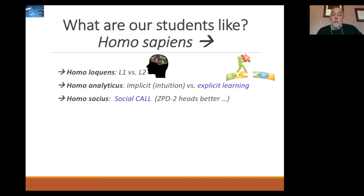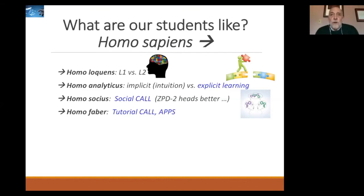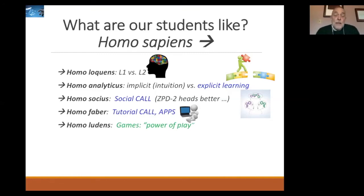We are also homo socius — social beings — and we constantly use dialogues, conversations, and interactions to learn things. The Russian psychologist Vygotsky used to talk about the zone of proximal development: basically, two heads are better than one, and you can do much more when working with someone else. That becomes very important when we talk about social CALL in constructing an online course. We are also tool users — homo faber — and here tutorial CALL comes to bear, along with apps and any other computer program or digital device that is helpful.